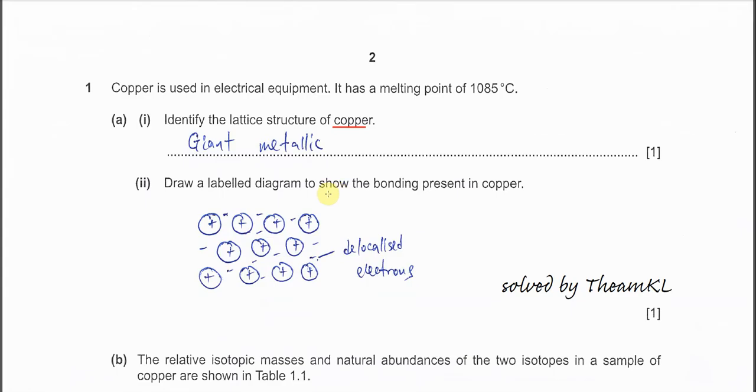Draw a labeled diagram to show the bonding present in copper. You need to at least draw four to six particles, the positive particles, and you need to label that. In this question is copper, you just label copper 2 positive, or you just say that positive cation. And of course, you have to put the negative charge around the positive particle, and you need to label that as delocalized electron. This one is for the metallic.